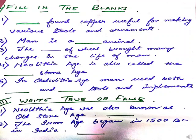Then comes true or false. Number 1: Neolithic Age was also known as Old Stone Age — this is false, because it is known as New Stone Age. Number 2: the Iron Age began in 1500 BC in India — this is also false, because the Iron Age began in India in 1000 BC. The statement gives 1500, which is false. Now children, you need to copy down each and everything and do the revision thoroughly.